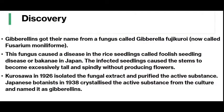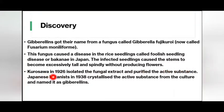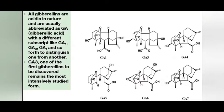Regarding the discovery of gibberellins: gibberellins got their name from a fungus called Gibberella fujikuroi, now called Fusarium moniliforme. This fungus caused a disease in rice seedlings called 'foolish seedling disease' or 'bakanae' in Japan. The infected seedlings caused the stems to become excessively tall and spindly without producing flowers. Kurosawa in 1926 isolated the fungal extract and purified the active substance. A Japanese botanist in 1938 crystallized the active substance from the culture and named it gibberellins.